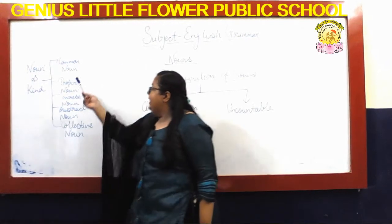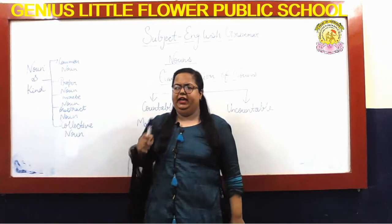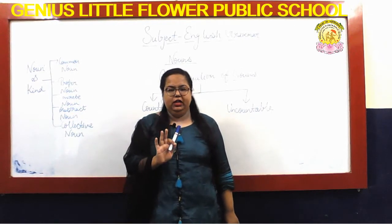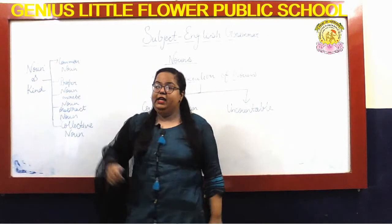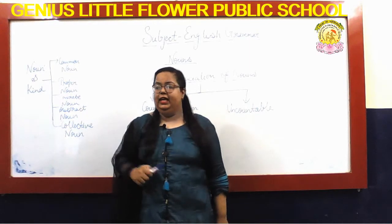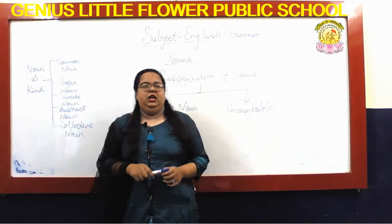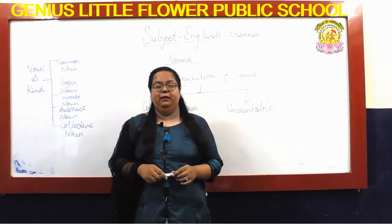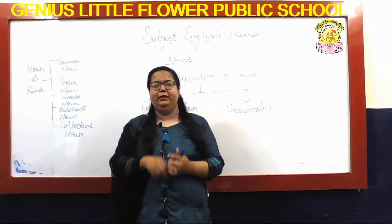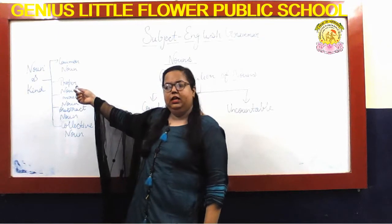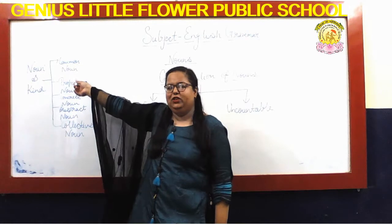First comes common noun — a boy came to school, so 'a boy' is common. Then we asked the boy his name — he said his name is Rohan — Rohan is now a name, so it becomes a proper noun. Then we asked which class he wants admission in — seventh class — that also becomes a proper noun.